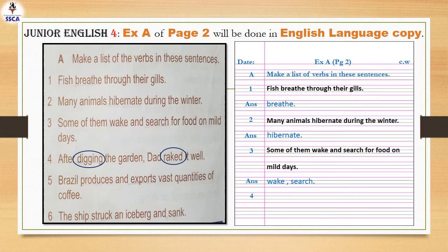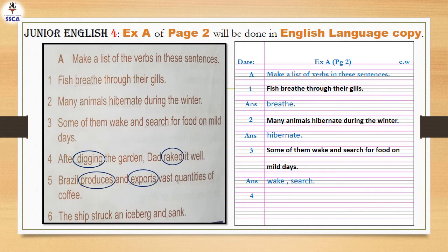After that, write question number 5: Brazil produces and exports vast quantities of coffee. Produce means paida karna, export means kisi doosri country ko sale karna, and vast means bahut badi taadaad mein. So Brazil huge quantity mein coffee produce karta hai aur export karta hai. The two verbs in this sentence are: produces and exports.